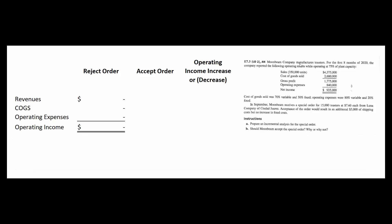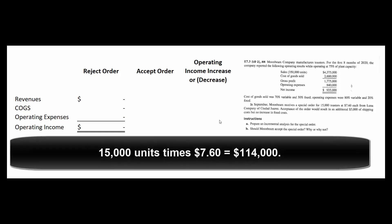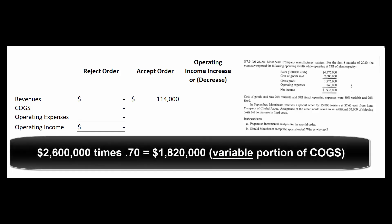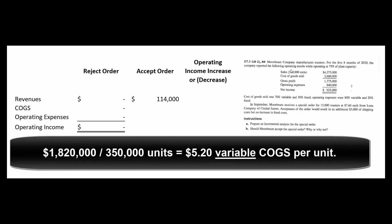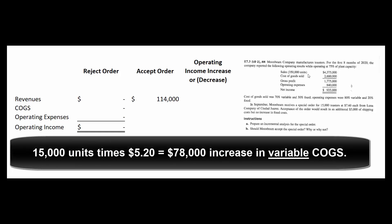Now let's see what would happen if we were to accept the order. Sales would go up by $114,000 — that's 15,000 toasters at $7.60 each. For cost of goods sold: 70% of $2,600,000 is $1,820,000 in variable costs. Divide that by 350,000 toasters and the variable cost per unit is $5.20. So for 15,000 units, variable costs go up by $5.20 × 15,000 = $78,000.